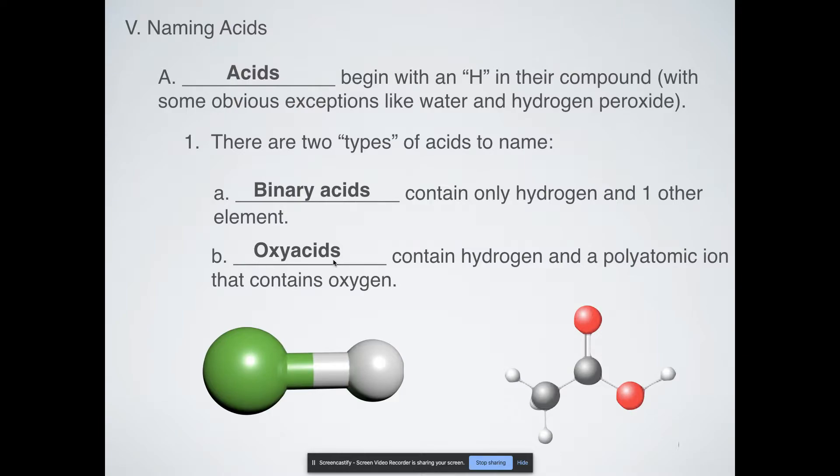Oxyacids on the other hand contain multiple things. This is acetic acid and that's the primary one in vinegar. These red circles are oxygens, these are our hydrogens, and then these are carbons. They're called oxyacids because they contain oxygens included with these hydrogens and other elements.